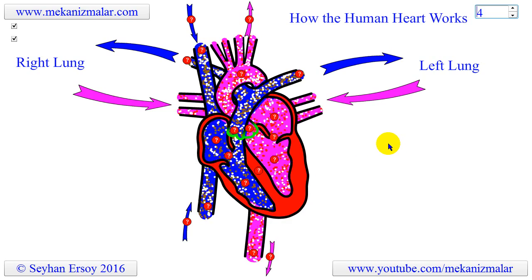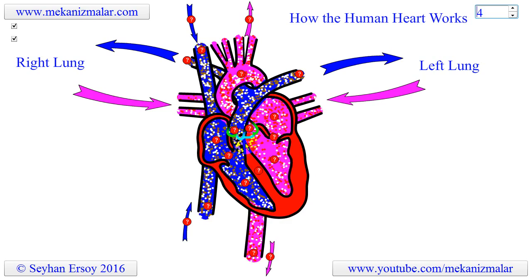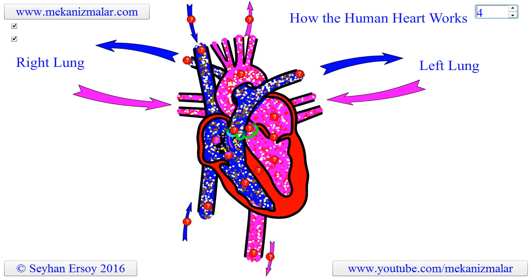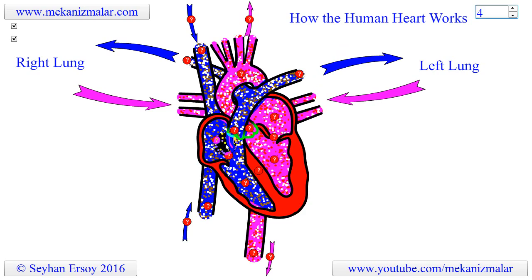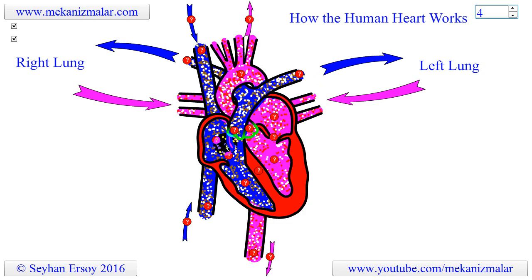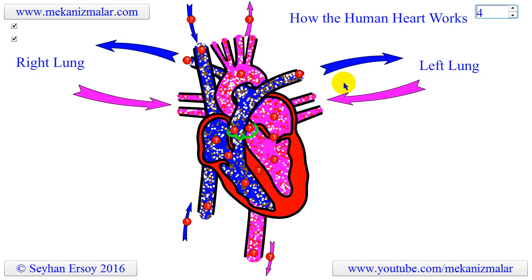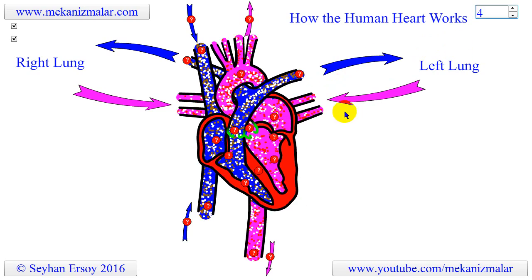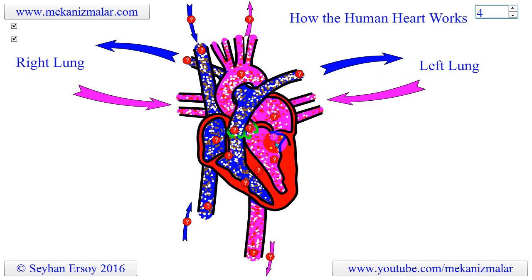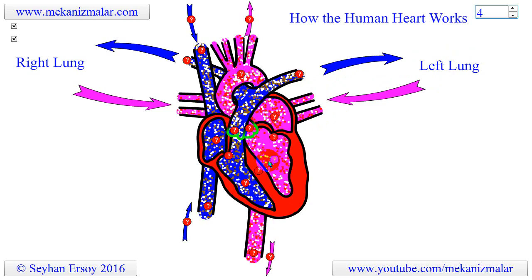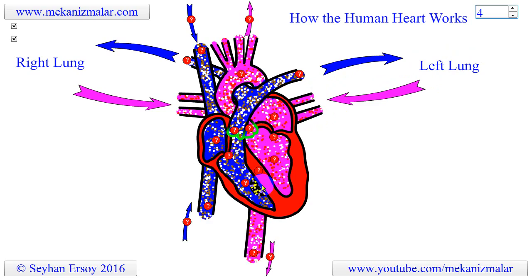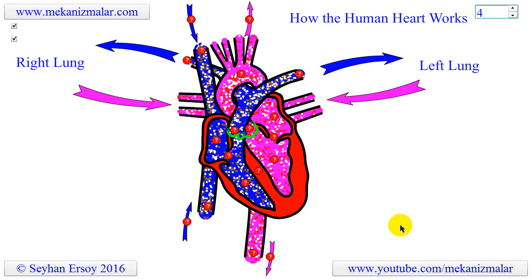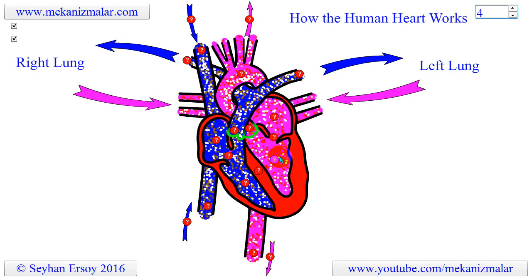In this animation, the oxygen-poor blood is shown in blue. The left side of the heart receives the oxygen-rich blood from the lungs and pumps it to the body, which I will call the second pump. Also in this animation, oxygen-rich blood is shown in pink.